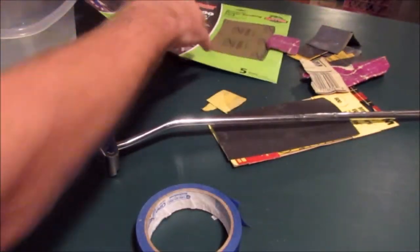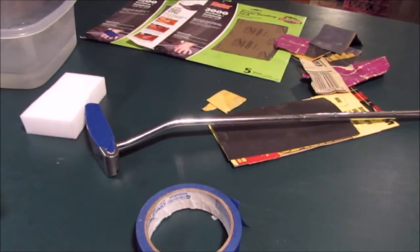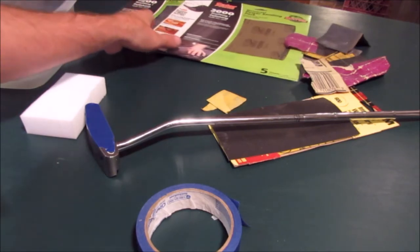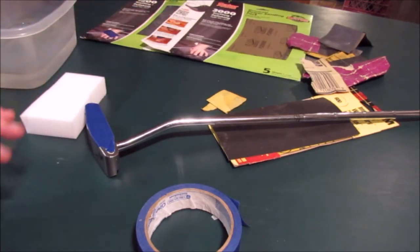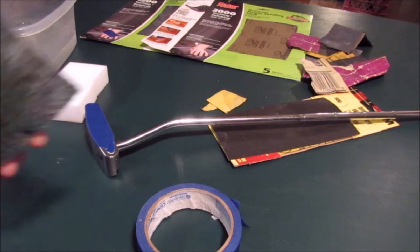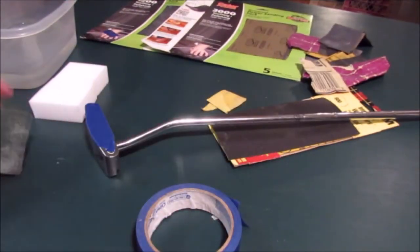I've got a 1200 grit and a 2000 grit, so those things can put a real shine on it. What I hope to do is just get it real smooth, real polished, and then I'm going to end up with the nickel finish on it.